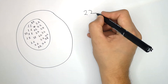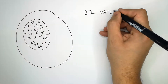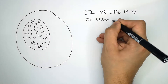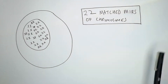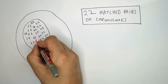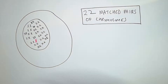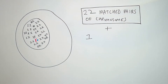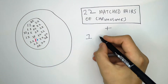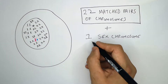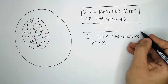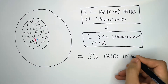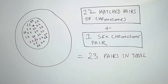In humans, we have 22 matched pairs of chromosomes. What determines if we're male or female are the sex chromosomes — we have one pair of sex chromosomes. This gives us a total of 23 pairs.